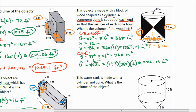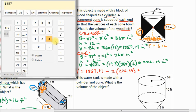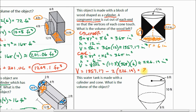To find the volume of what's left over, we take the total volume of the cylinder — 1357.17 — and subtract the volume of each cone. Since there are two cones, we subtract 226.19 twice: 1357.17 − 2 × 226.19, which gives us approximately 904.79 inches cubed.